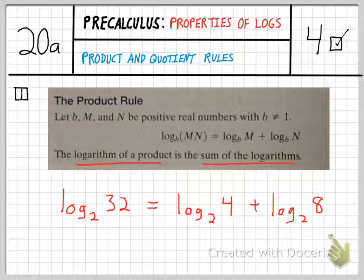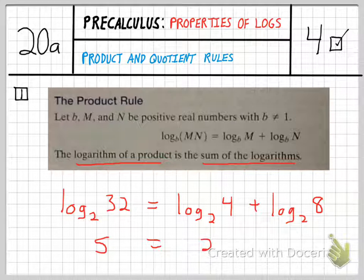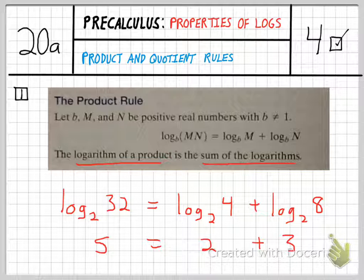Now let's work these out to see if this actually gives us a true statement. So 2 to what power equals 32? If you think about that for a minute or two, you end up with 5. Log base 2 of 4 is 2, and log base 2 of 8 is 3. And it does make sense that 5 equals 2 plus 3.